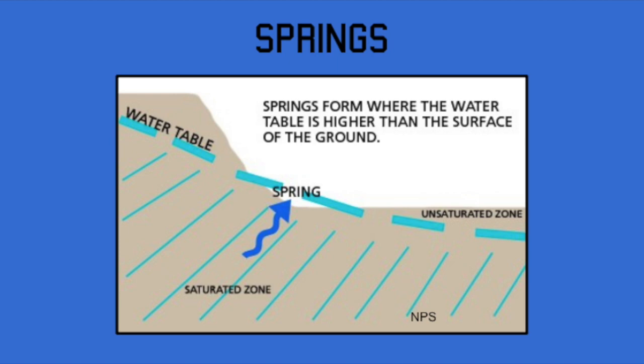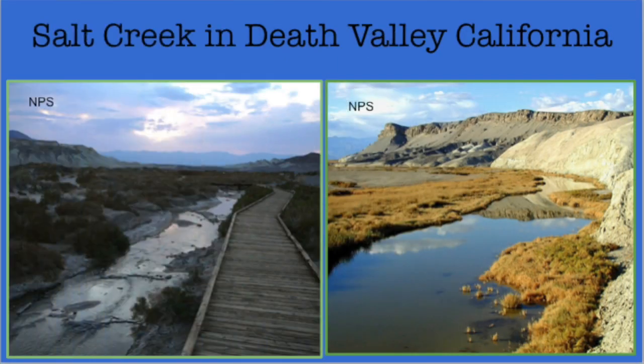Here are two examples of streams formed by underground springs. The first is in Death Valley, California. Salt Creek is a small stream that flows during winter and spring. There are pools near the upper portion of Salt Creek that remain year-round.